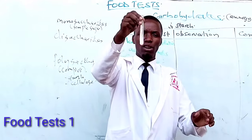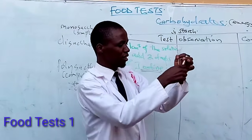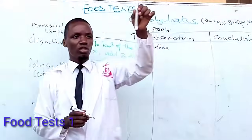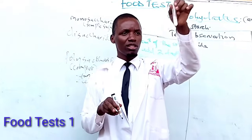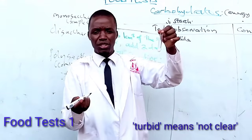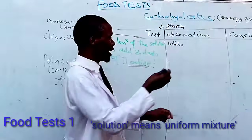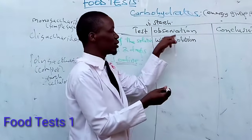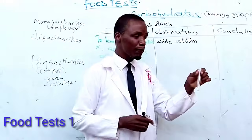Now, when you look at this solution, I want you to tell me what color it is. I think you can see it is white — so this is a white solution. When you write your observation, you need to first take note of the color of the initial solution. This solution is white, but it is also not very clear, so we use the word 'turbid.' Turbid means something that is not clear. So this is a white turbid solution.